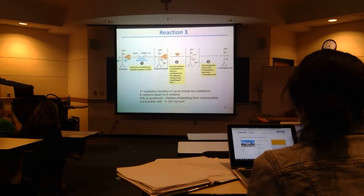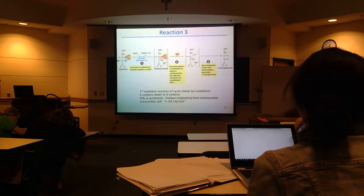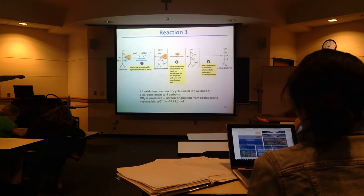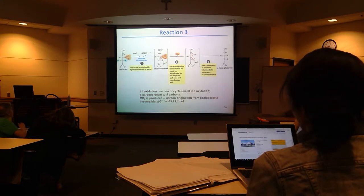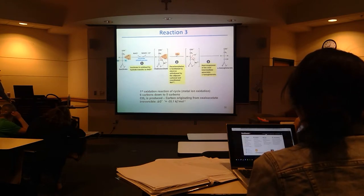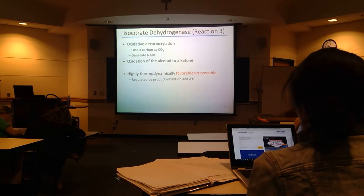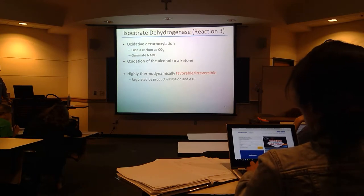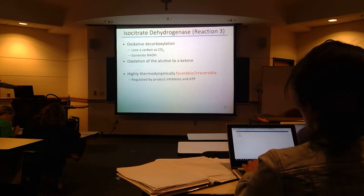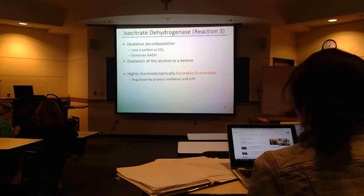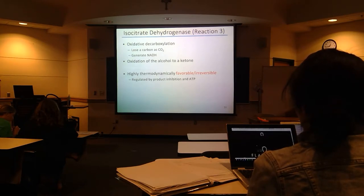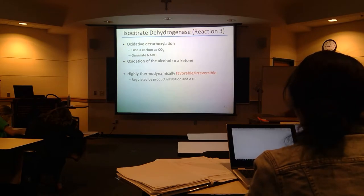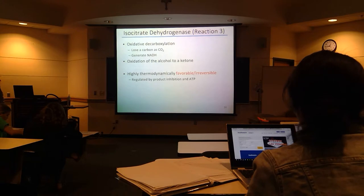This is very irreversible, very spontaneous — heavily pushed forward. The generation of isocitrate makes this reaction even more beneficial, and this is much easier to decarboxylate than the previous citrate form. Oxidative decarboxylation: we release CO2, we oxidize, we generate NADH, and we get a ketone produced. This is regulated mainly by product inhibition and ATP — if you have a lot of ATP, this is going to be inhibited. The whole cycle will get turned down if you have a lot of ATP. Remember, isocitrate dehydrogenase is what carries out that reaction.